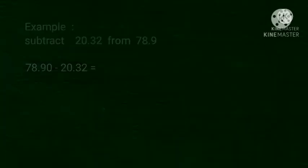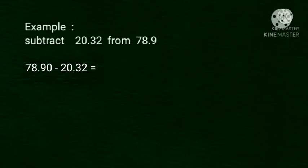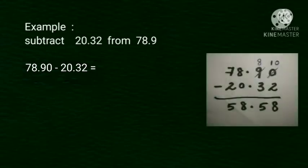Let's see another example. Subtract 20.32 from 78.9. First, we arrange in column. 78.9 minus 20.32. Here, we add 0 after the digit 9.